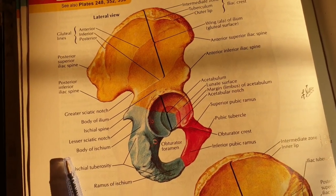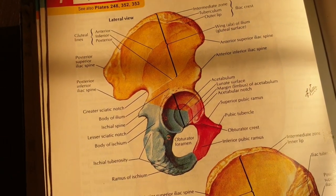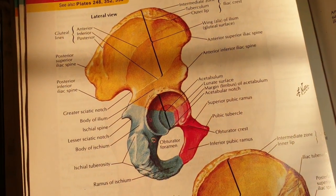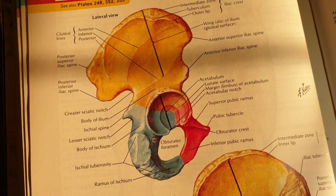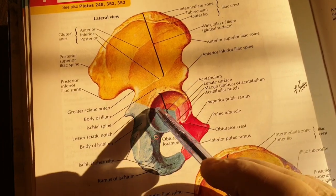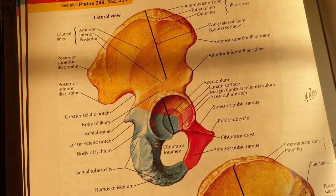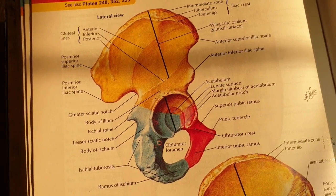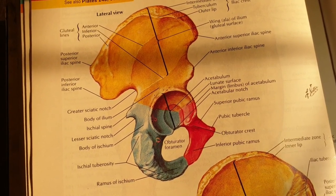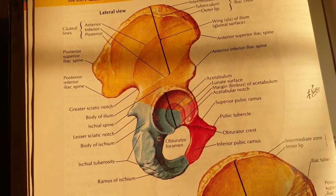All three bones ossify from different ossification centers and eventually fuse. First they are cartilaginous, and if you take an X-ray of a young person, you can see a sign which resembles the monogram of a Mercedes-Benz car. This is called the Mercedes-Benz sign. That does not mean the bone is broken there — it has simply not ossified yet.